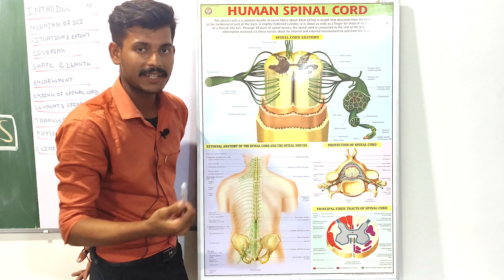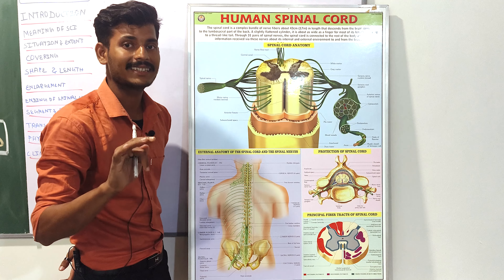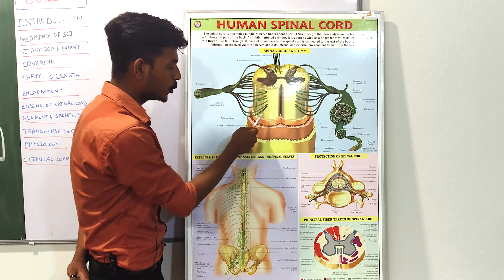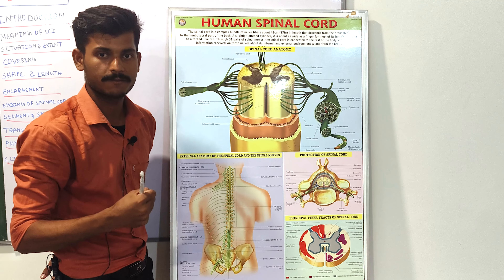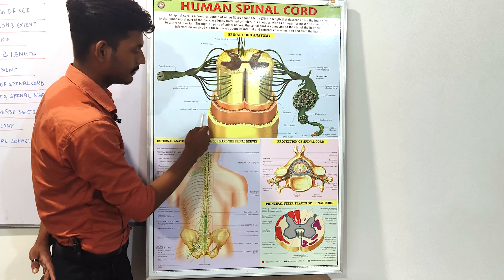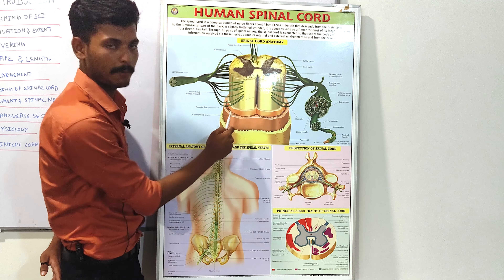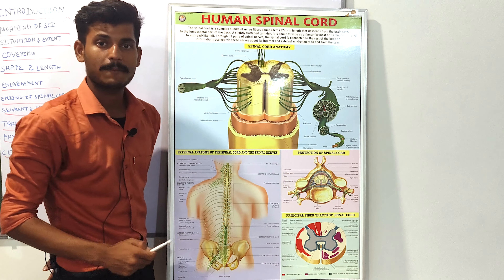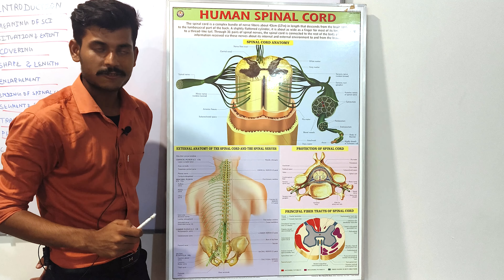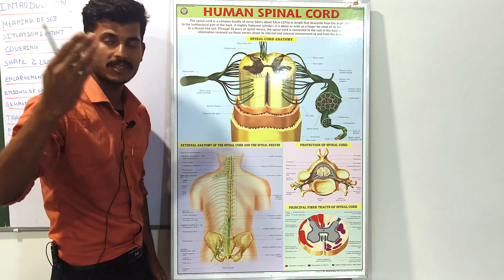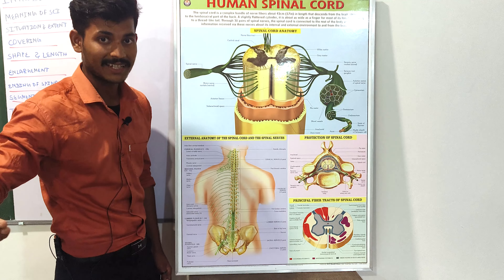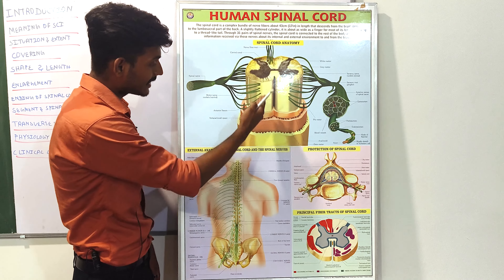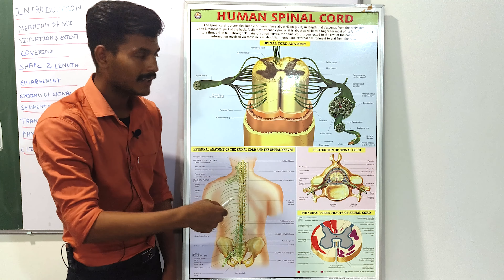The protection of the spinal cord is the same as that of the brain — covered by three layers. Starting from outer to inner: first we have the dura mater, which is tough; then we have the arachnoid mater; and then we have the pia mater. These three layers provide protection. The spinal cord is a very delicate structure, so nature provides many barriers — skin, muscles, vertebral column, and then these three protective layers.